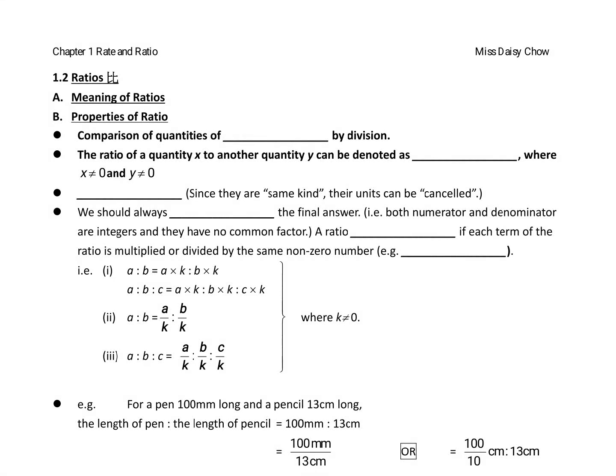Your notes page 2, so we finished the part about the rate, so we will move on to another section - that is ratio. So meaning of ratio. Before we start, let's have a very quick review on what we learned about the rate. The definition of the rate is that it is a comparison of two quantities of different kinds by division.